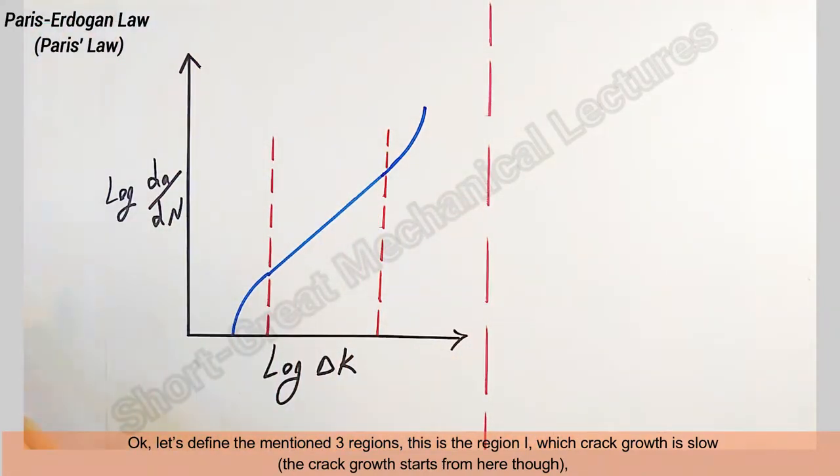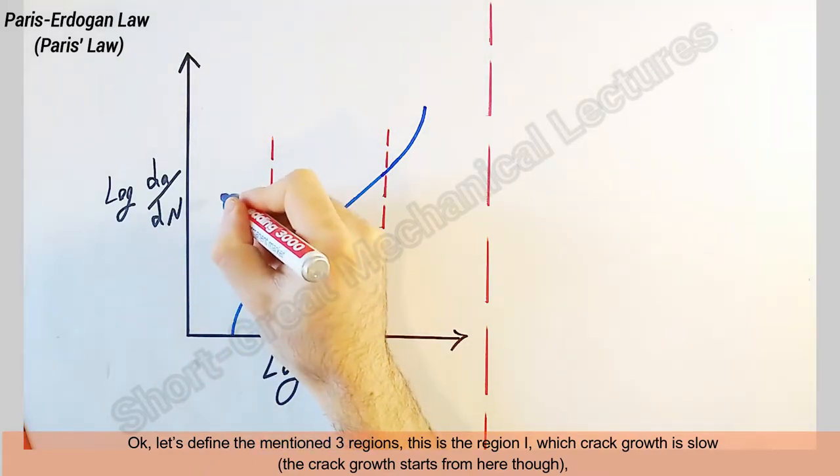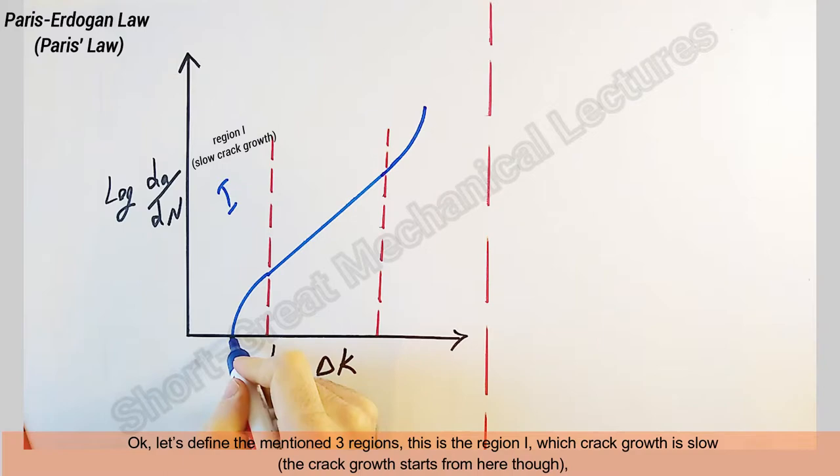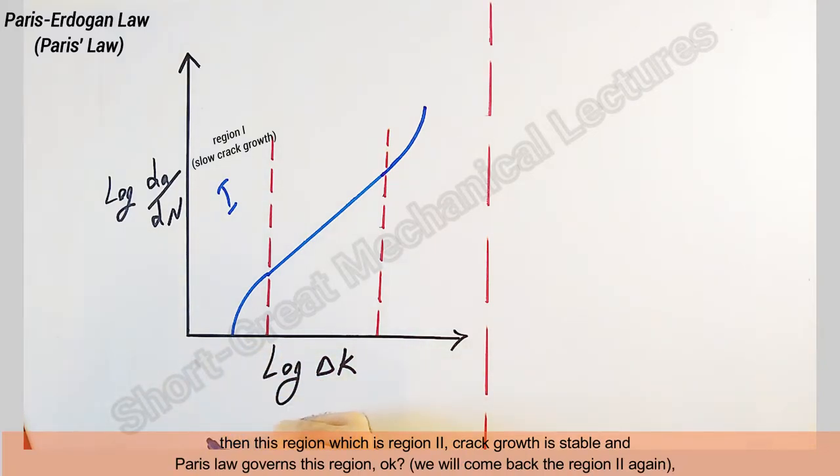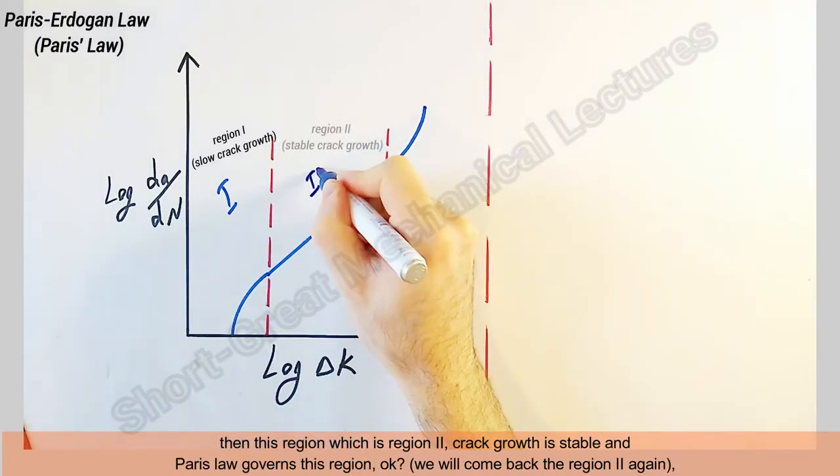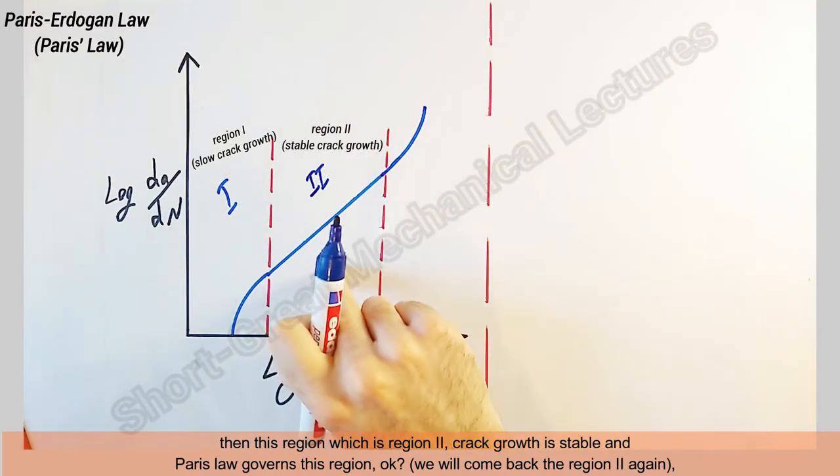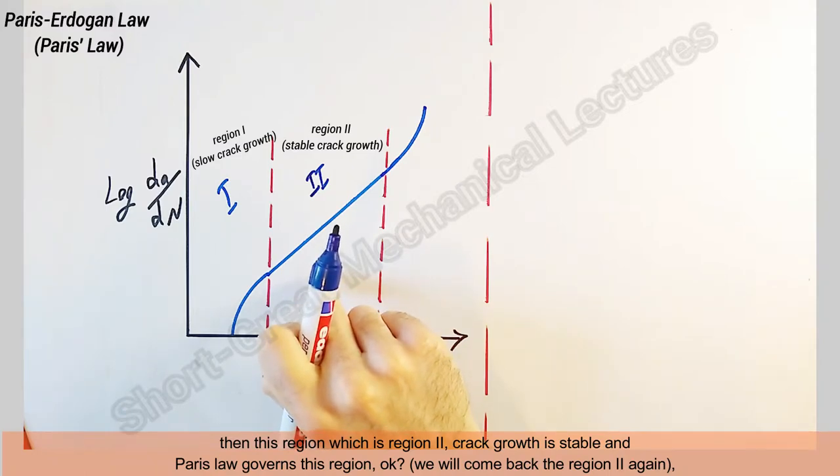Let's define the three regions. This is region one, which crack growth is slow. The crack growth starts from here. Then this region, which is region two, crack growth is stable and Paris law governs this region. We will come back to region two again.